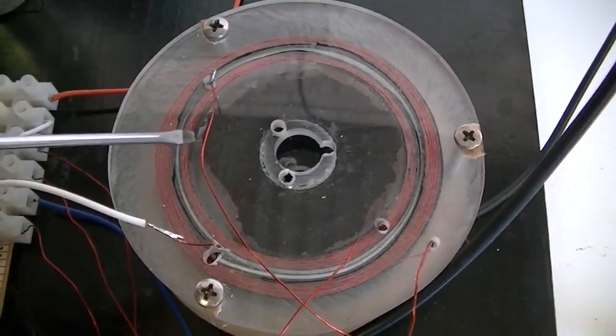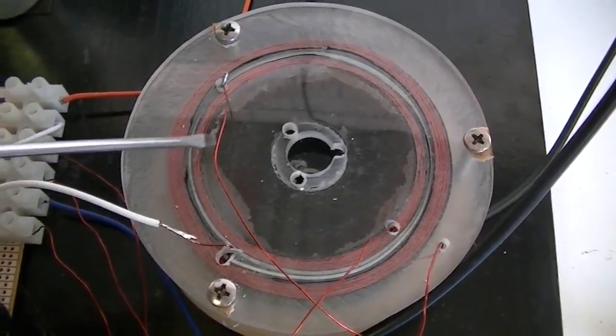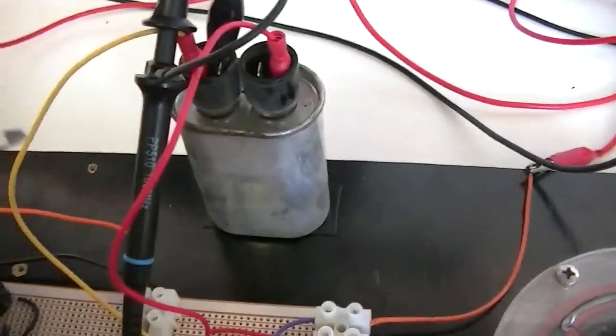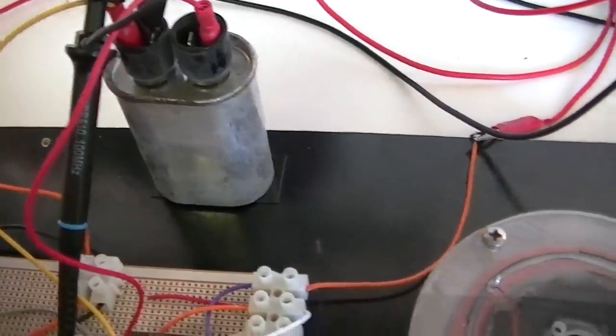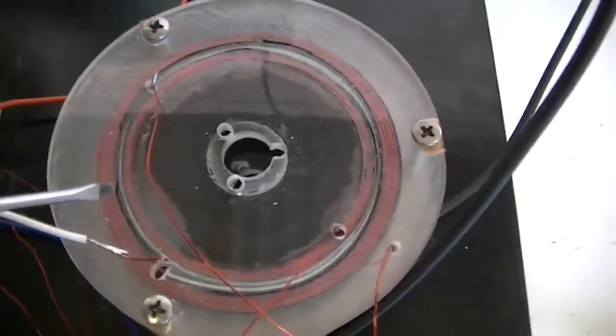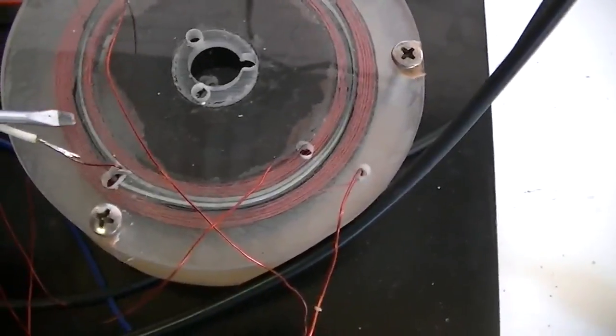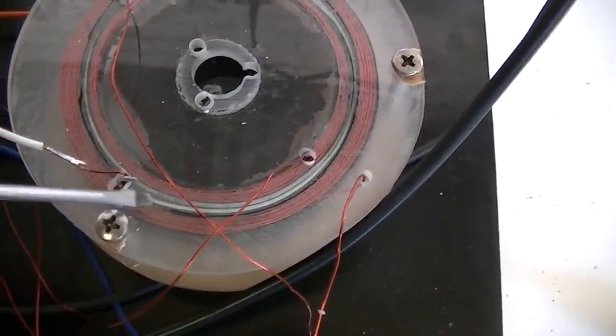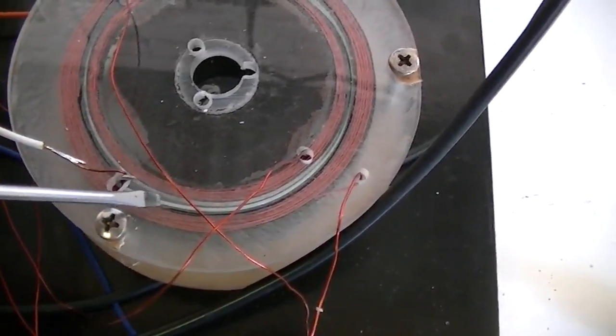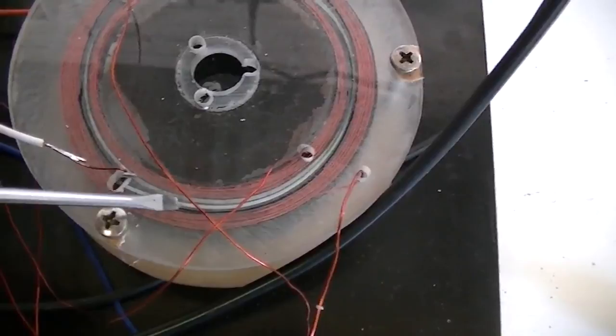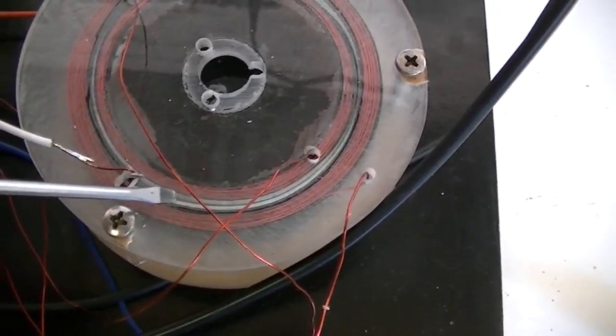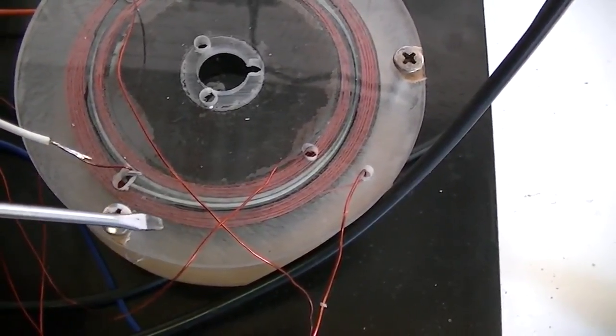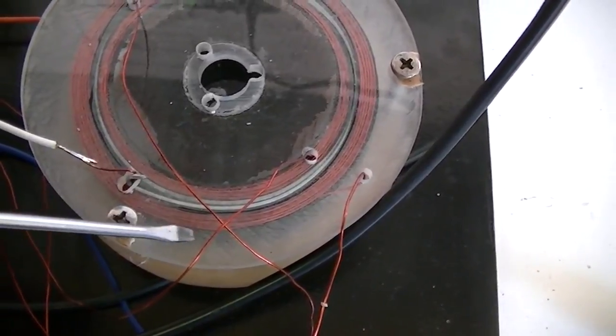Around that I have wound what I call the tank coil which of course goes to this tank circuit here, and after that I have wound some soft iron wire around that, two layers. This is to make up a second core and then around that I have wound our primary coil or drive coil.